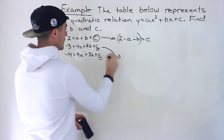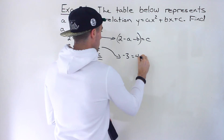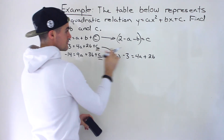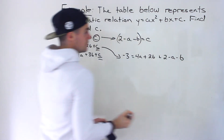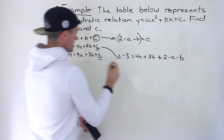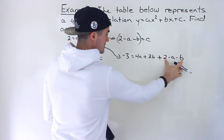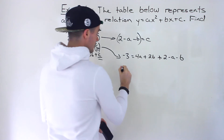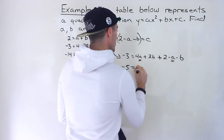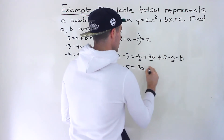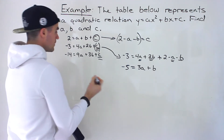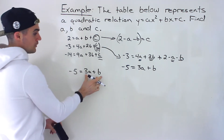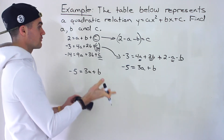When we do that for equation two, we'll have negative 3 equals 4a plus 2b plus (2 minus a minus b). Be careful with your algebra. Simplifying: bring the 2 over, negative 3 minus 2 gives us negative 5. Then 4a minus a gives us 3a, and 2b minus b gives us b. So we get negative 5 equals 3a plus b. Notice this equation now only has a and b — we got rid of c.